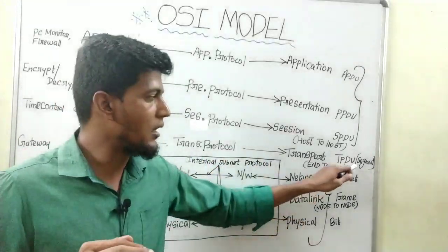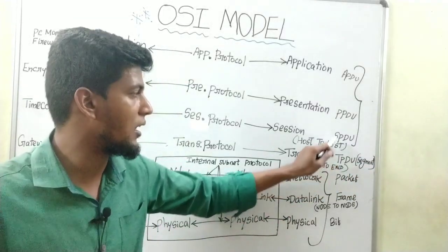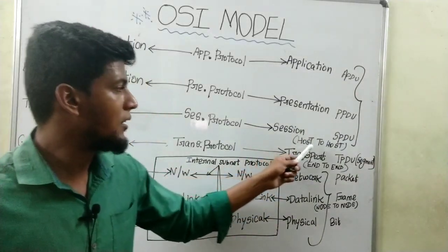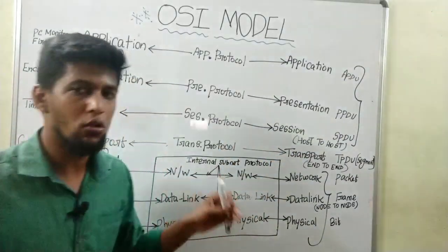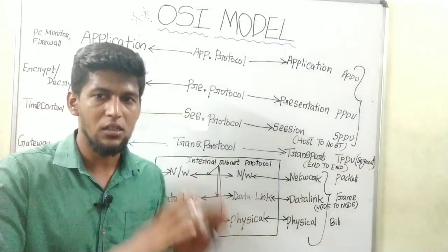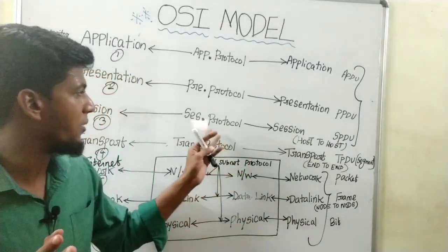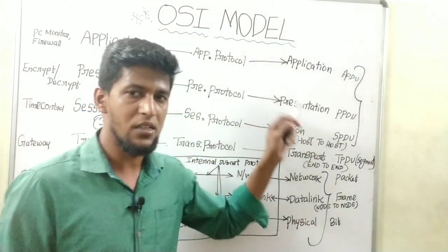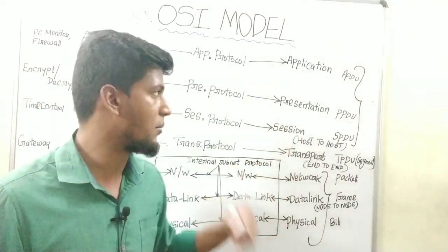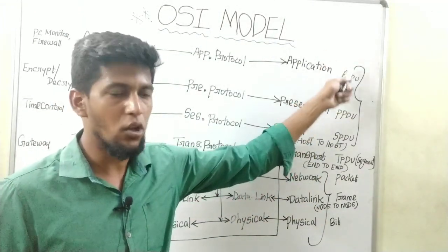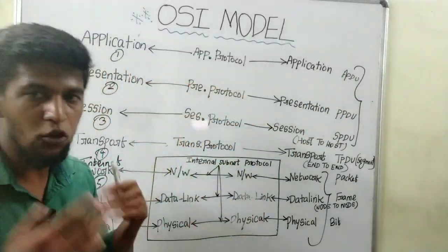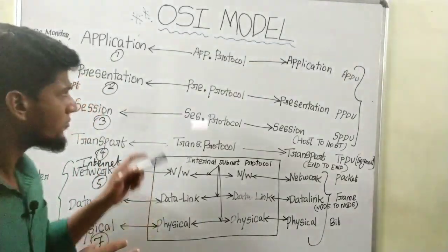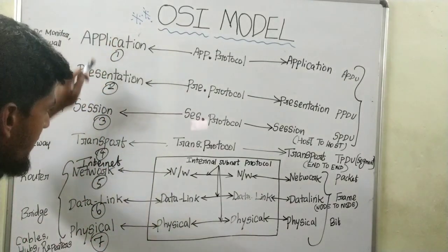What do we need to do in the segment? Host-to-host information and transport. The information is host-to-host — a system will transmit. We use the session protocol. For the presentation layer, we use the presentation protocol for data. We use the application protocol for data. We use the application layer and the presentation layer.